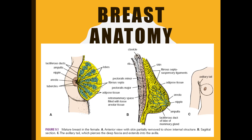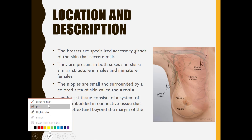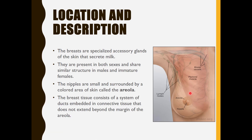Today we will cover a new topic: breast anatomy. First, the location and description. The breasts are specialized accessory glands of the skin that secrete milk. They are present in both sexes and share a similar structure. In males and immature females, the nipples are small and surrounded by a colored area of skin called the areola. The breast tissue consists of a system of ducts embedded in connective tissue that does not extend beyond the margin of the areola.